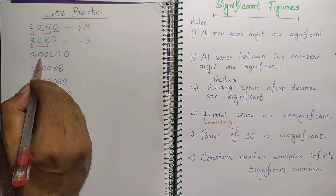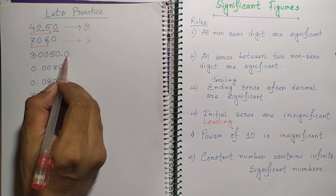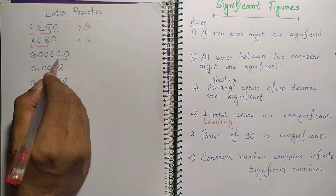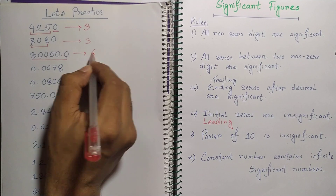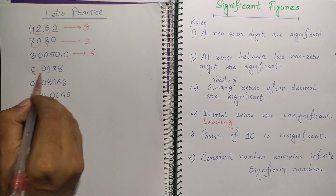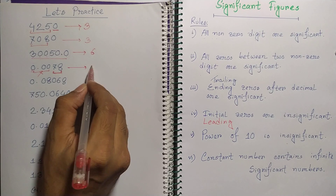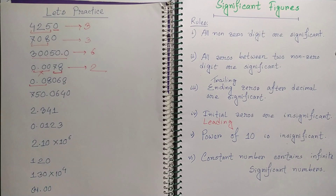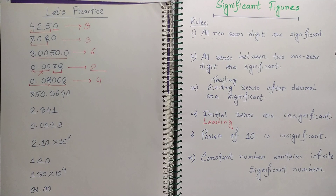For 3,00 5. (3005. with decimal): the two zeros are between 3 and 5, and the decimal point makes trailing zeros significant. So all digits are significant — we have 6 significant figures. For a number with all leading zeros: we ignore the leading zeros and count only 2 significant figures (7 and 8). For another example with leading zeros, ignoring them leaves 4 significant digits.